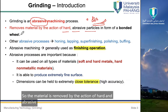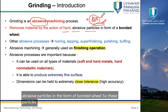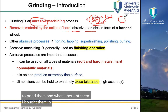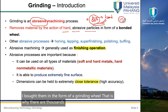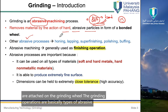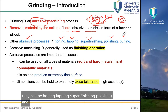The material is removed by the action of hard abrasive particles in the form of a bonded wheel. These particles are glued and bonded together in the form of a grinding wheel, so there are thousands of grinding particles attached on the wheel. Grinding operations are types of abrasive processes and they can be honing, lapping, super finishing, polishing, and buffing.